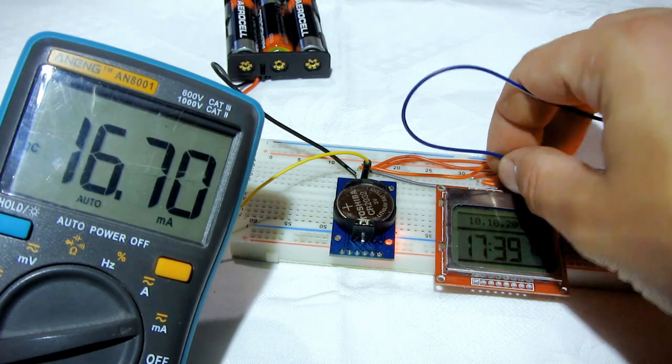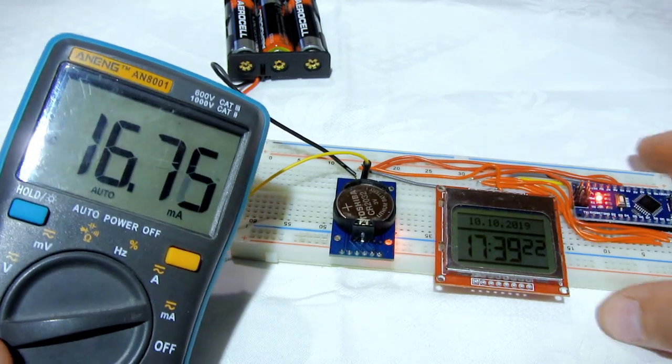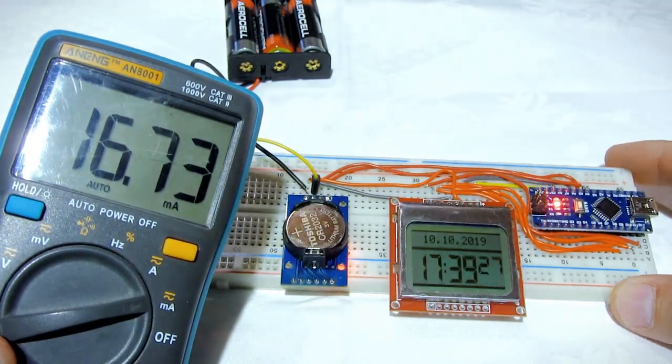If I turn off the backlight, I get a little better results. Now my project draws 16 mA, but this is still too much.